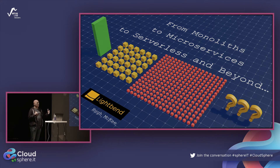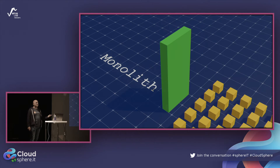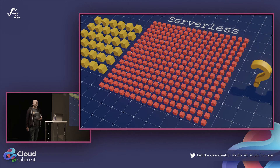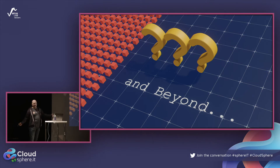We've got three significant architectural patterns, and each one of us is involved at maybe different stages. I want to walk through this visualization to convey more than I can say in words by using these pictures. This big rectangle represents the monolith, next to it represents microservices, and what's next represents serverless. At the end of this talk I'm going to make a fool of myself by trying to predict what will happen in the future.